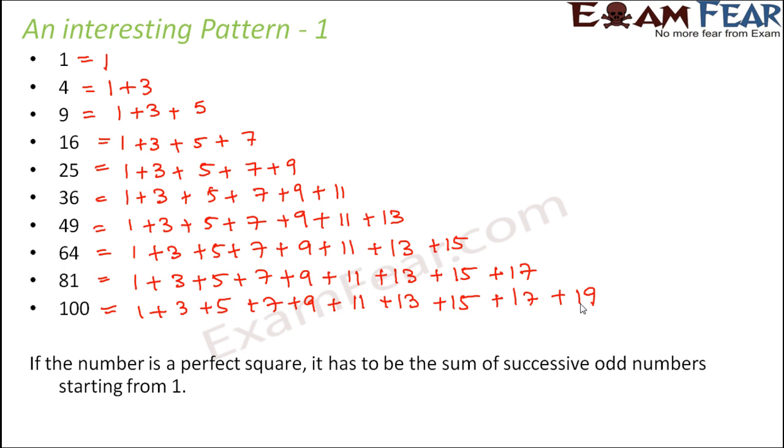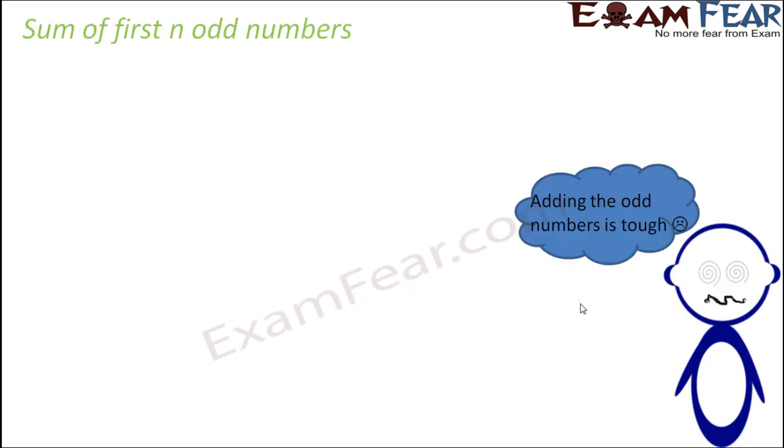So now the bigger the number is, the bigger the sum would be, like if the number is in thousands, so it would be sum of some first n odd numbers. Now you might ask that, okay, but how do we find out the sum of first n odd numbers? Because what is n? n is the number of odd numbers. So as the perfect square value increases, the value of n also increases, right?